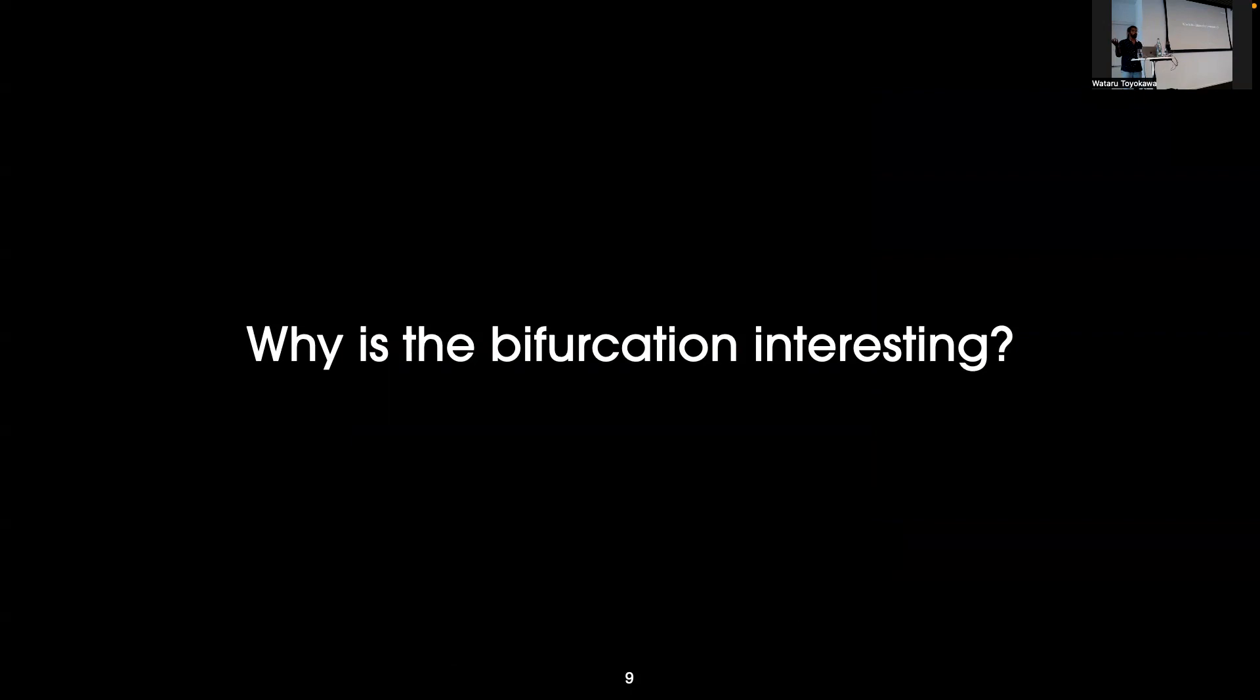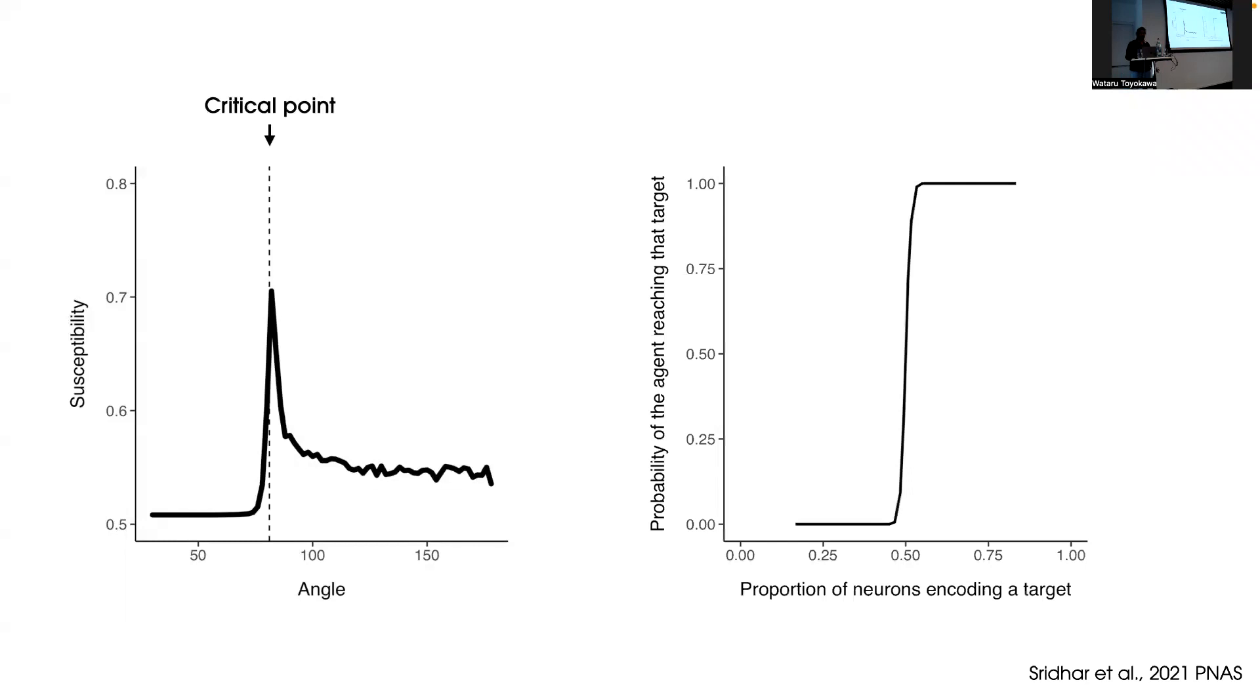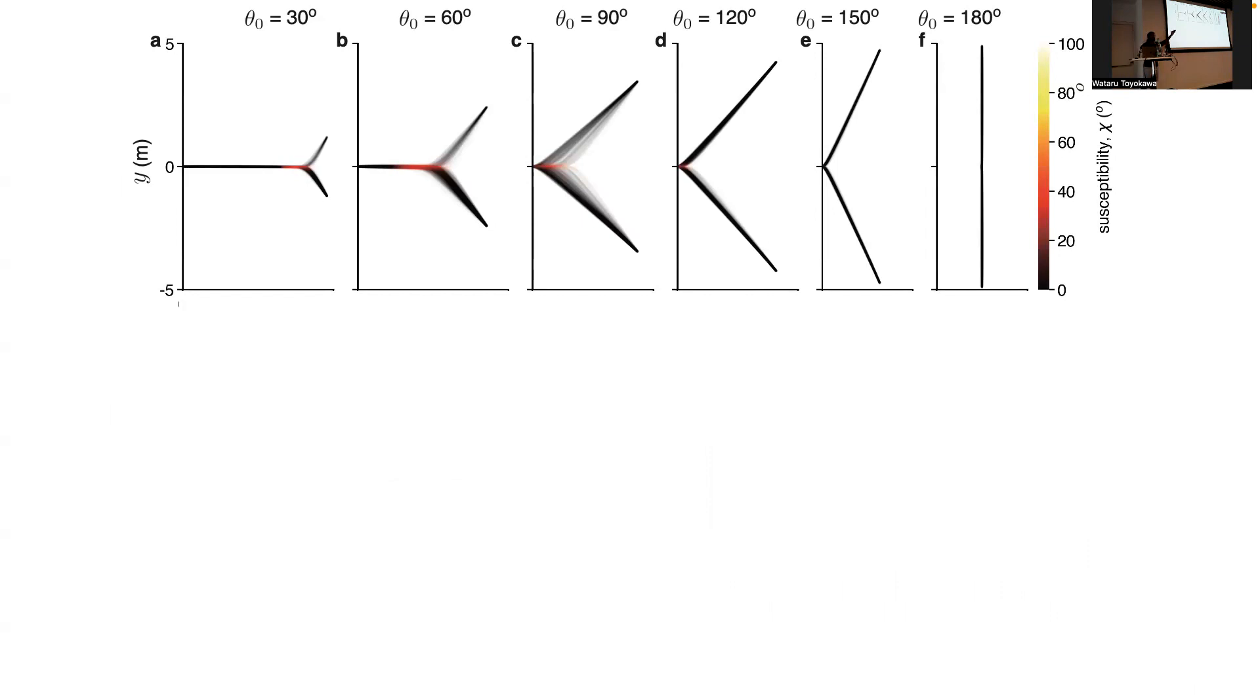So now we expect animals would exhibit this specific movement path. But why do we care? Why is this bifurcation interesting? From dynamical systems theory, we know that any system that undergoes bifurcation will see a peak in a feature called susceptibility. In the context of a decision-making system, this means the animal is able to amplify small differences between two options, so it's able to make better, more effective decisions.